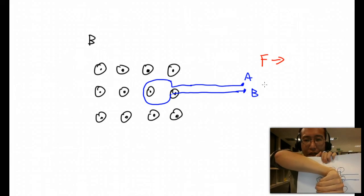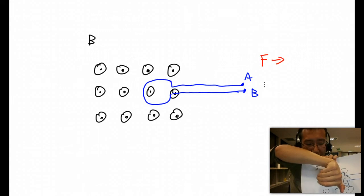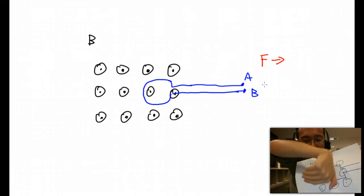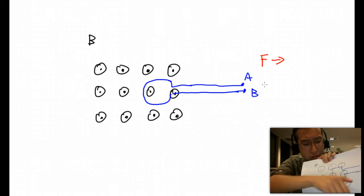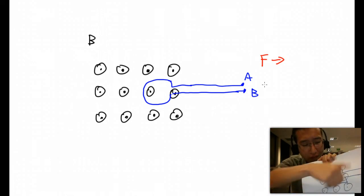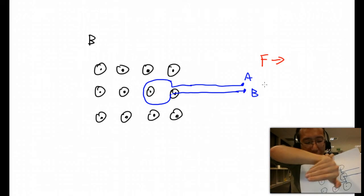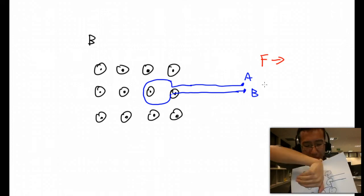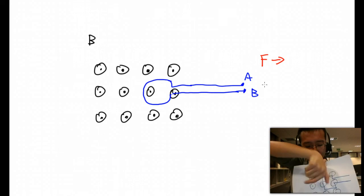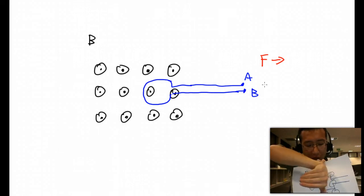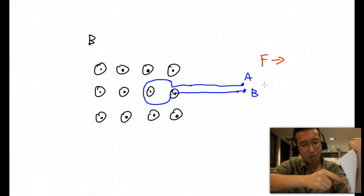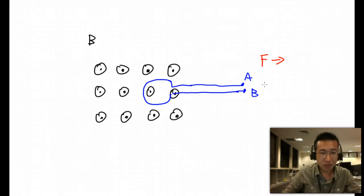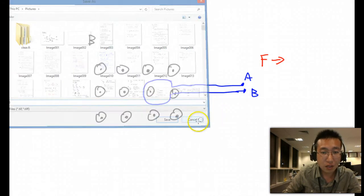The current goes downwards on this side, to the right on the bottom, and upwards on the other side. So this loop, when it's outside the field, creates a magnetic field pointing outward. Using the right-hand grab rule, the wire must create a clockwise current.